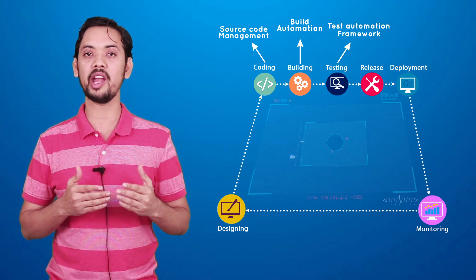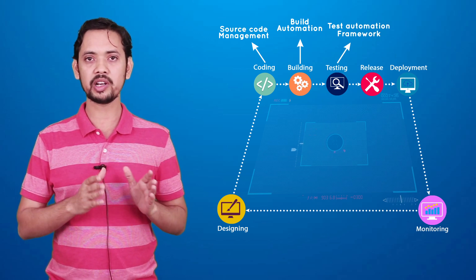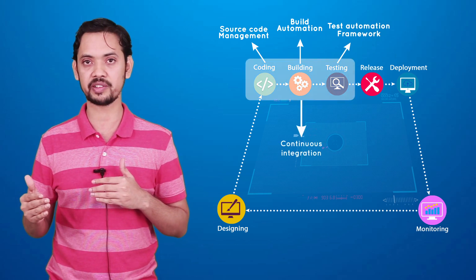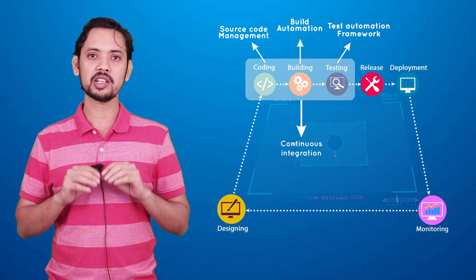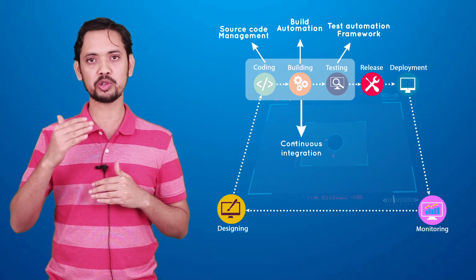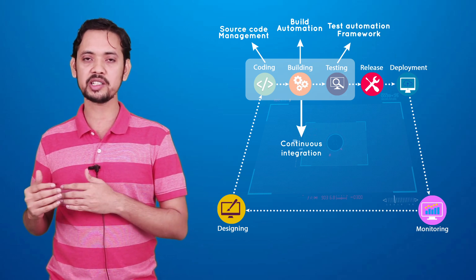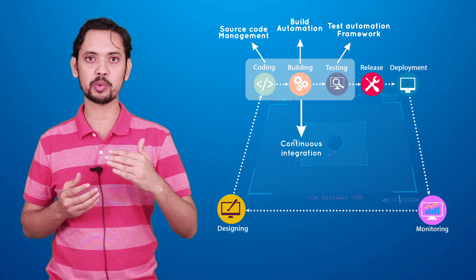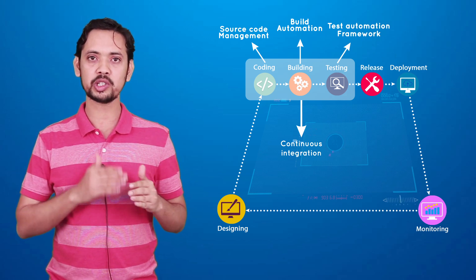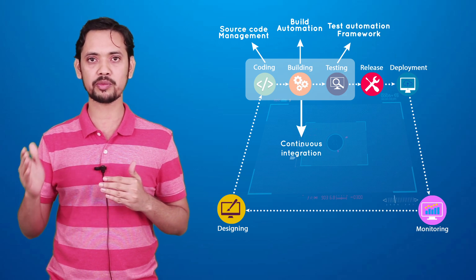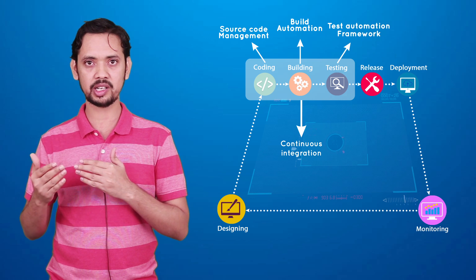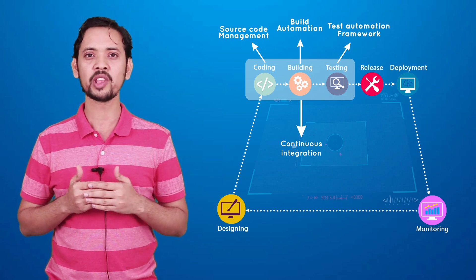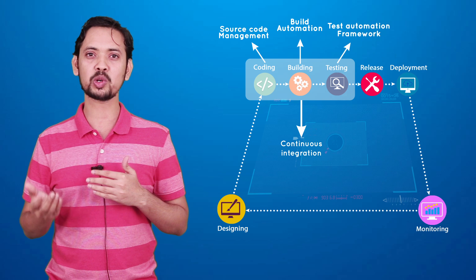What you need for continuous testing is a build automation framework, a test automation framework, and integration between them. Generally, continuous build and continuous testing combine together to create continuous integration. In continuous integration, the developer pushes code and the tester pushes test cases into a repository, and without any manual intervention every push triggers a job: the build runs, then the test automation framework executes all test cases, and the test report gets generated.